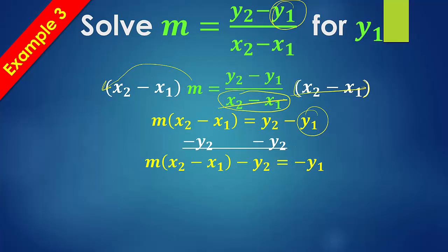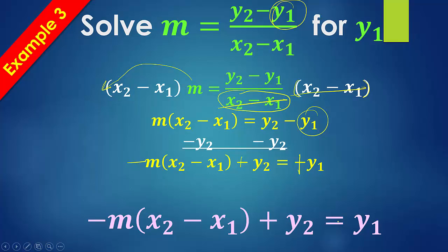Now, we haven't really encountered this yet, but my only problem is I have this negative sign here, and I cannot have that. So when you have that, we basically change the sign of everything that's outside of parentheses. So this becomes plus. This becomes minus. This is inside the parentheses. We don't change it. This becomes plus, which gives us our final answer of negative m times x sub 2 minus x sub 1 plus y sub 2 equals y sub 1.